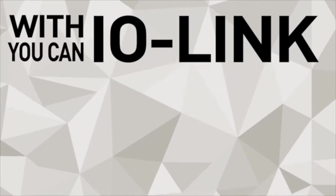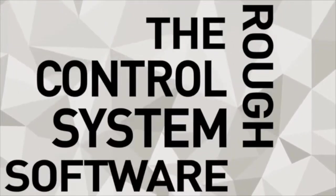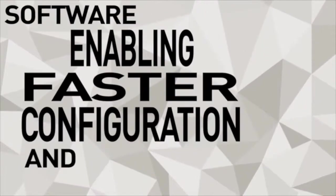With IO-Link, you can read and change device parameters through the control system software, enabling faster configuration and commissioning.